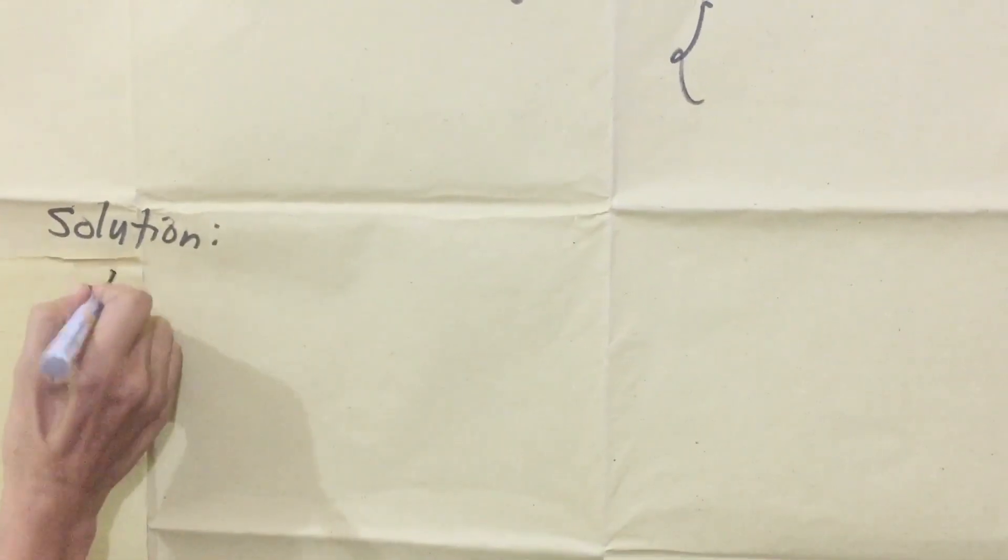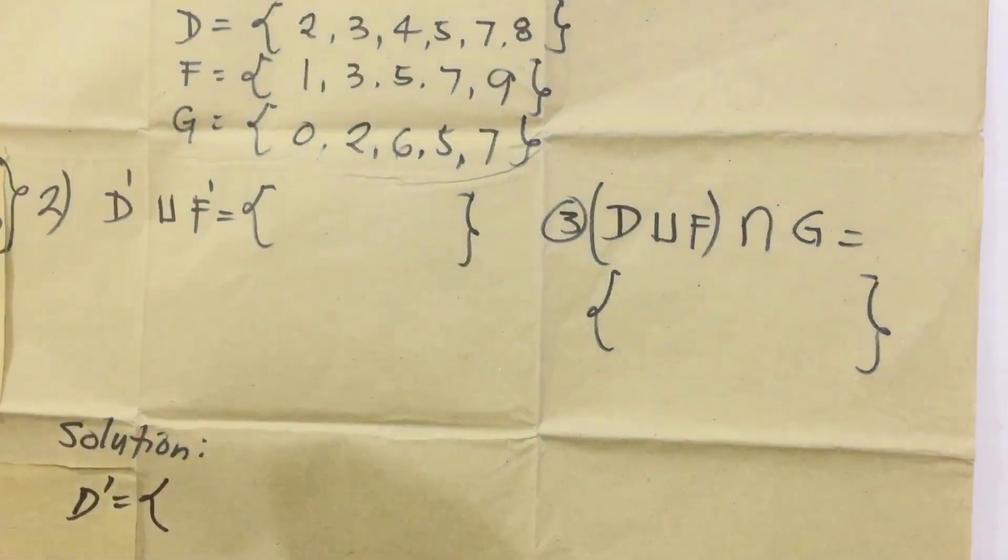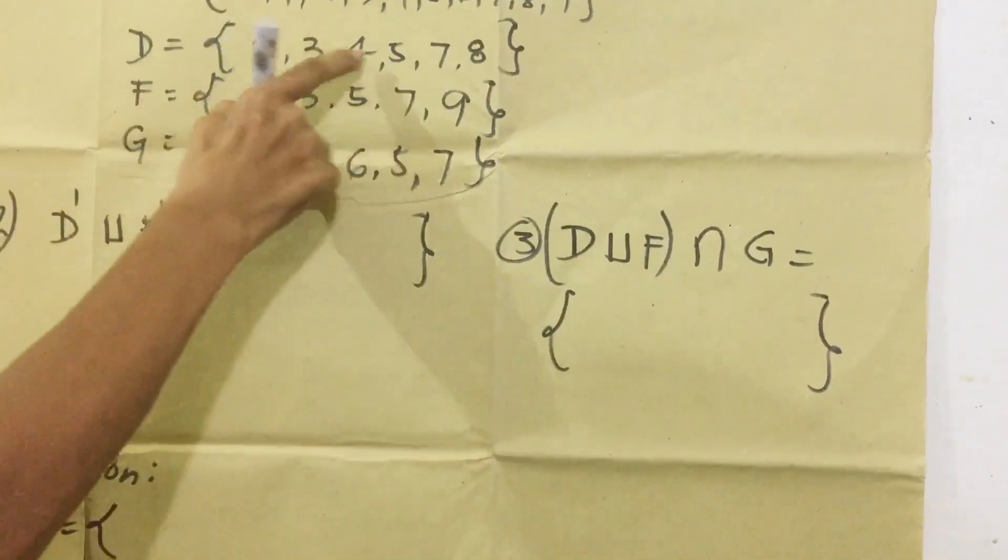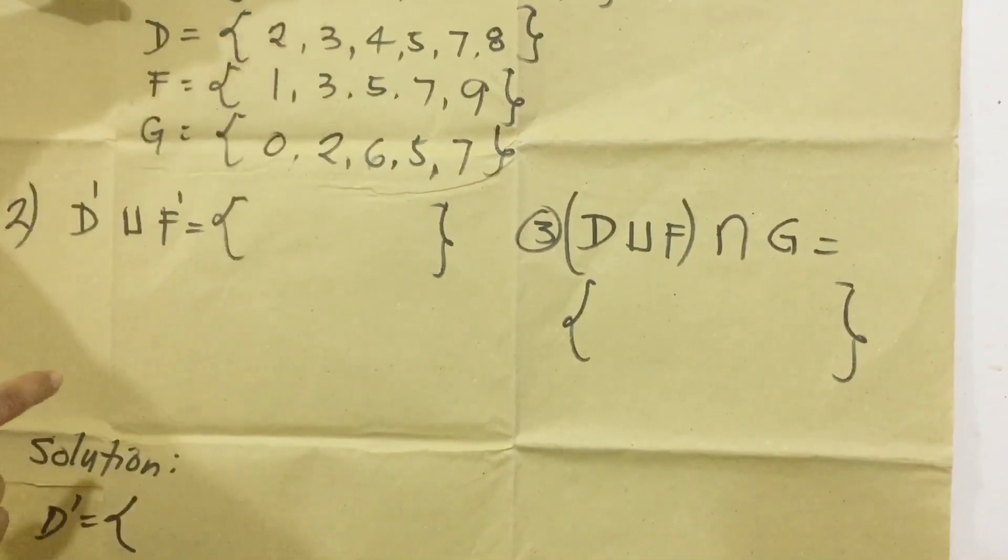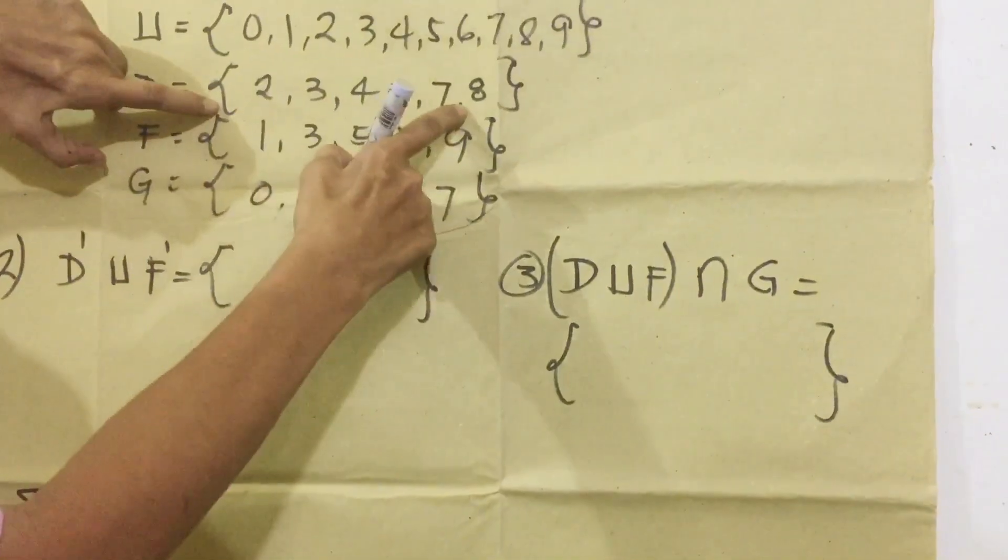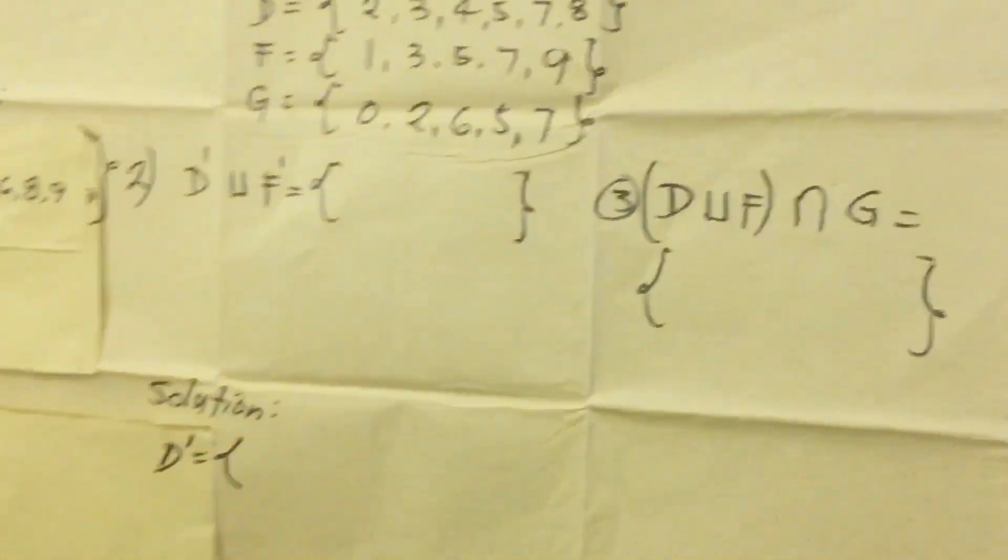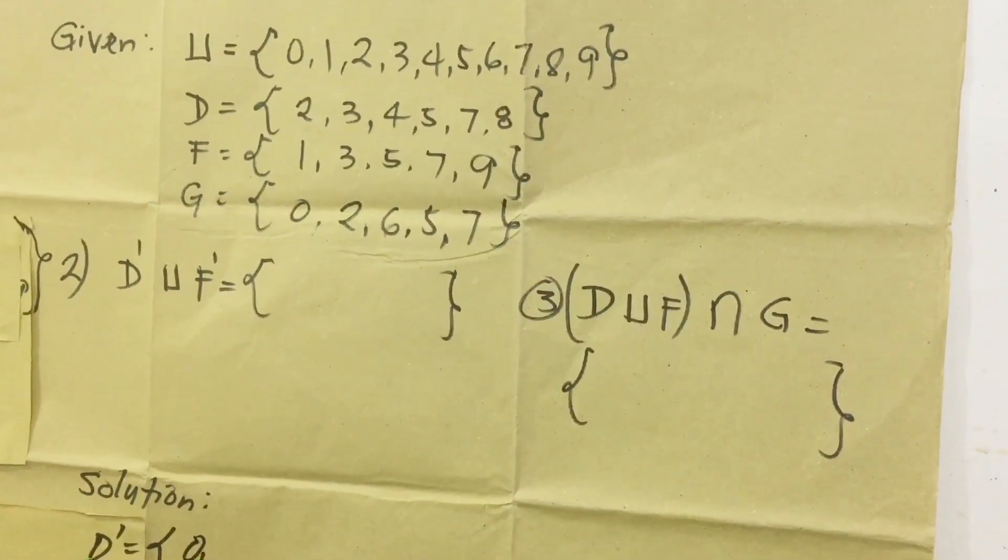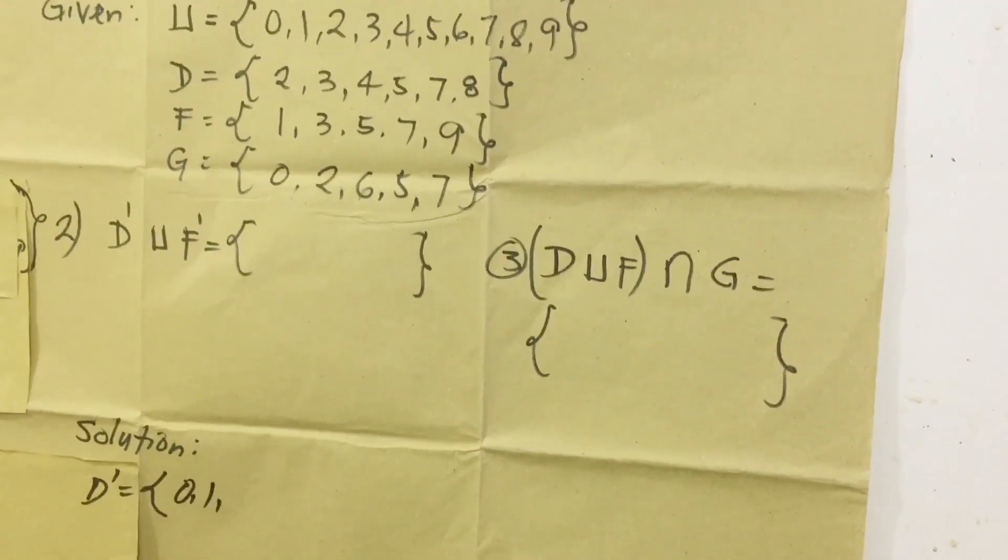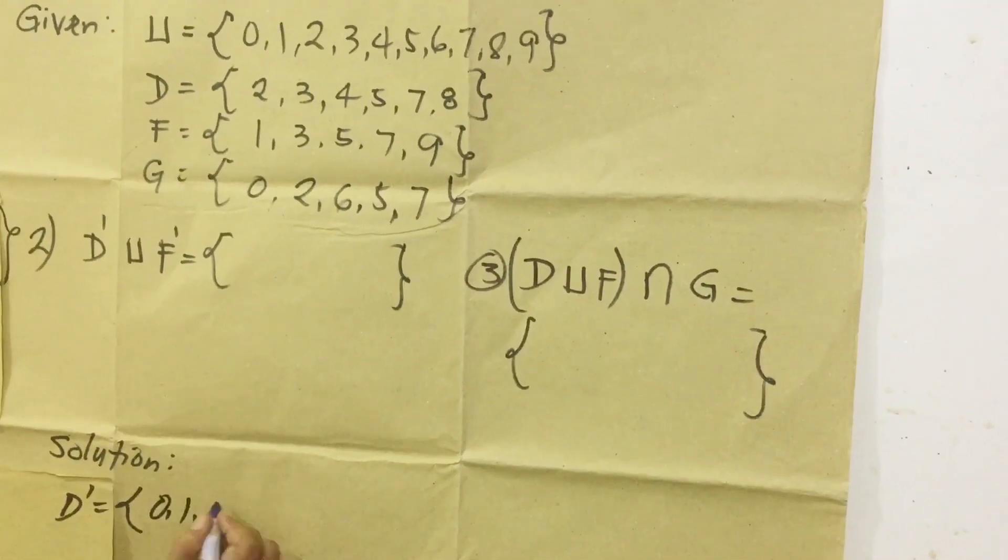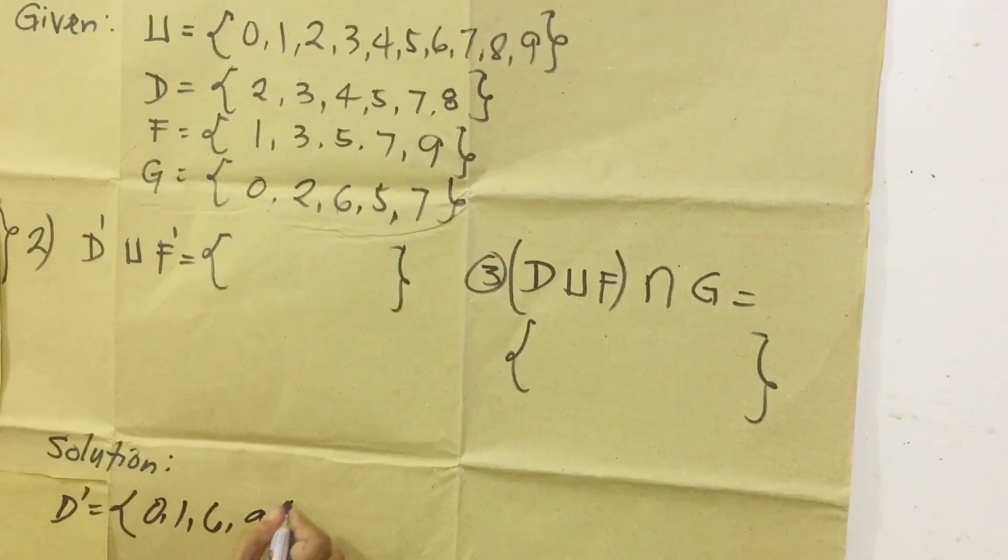D complement is equal to this set. So babalik tayo sa D. Yun D ay 2, 3, 4, 5, 7, 8. Ang complement, yung wala. Dito tayo kukuha ngayon. 0, wala. Sa 2 meron siya. Wala siyang 1. 3 meron, 4 meron, 5 meron, 7 meron, 6 wala. 8 meron, 9 wala. So ito lang yung complement ng D.